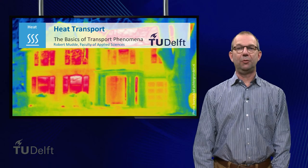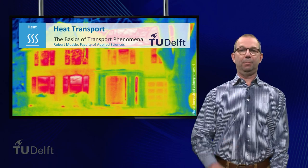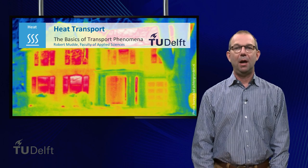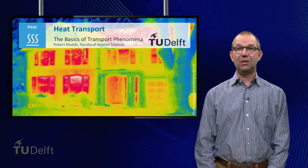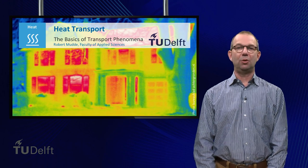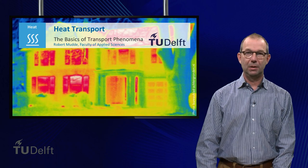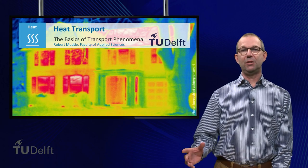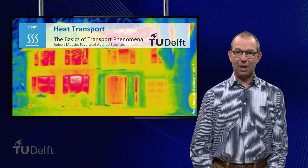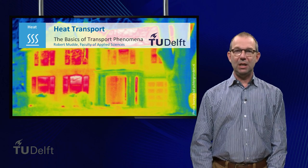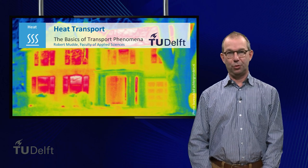You have probably taken a dish out of the oven only to be greeted by a gust of hot air blowing from the oven. How can it be that the oven can keep its warmth inside so well? Isolation of heat can be seen everywhere, not only in your oven. Take for instance this picture of a house taken with an infrared camera. You can see that the windows are much hotter than the walls of the house.